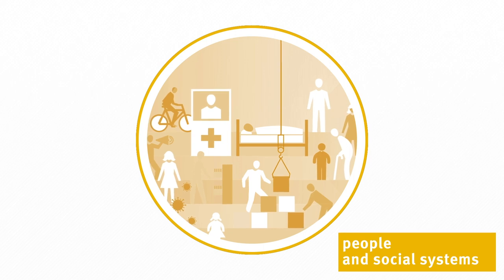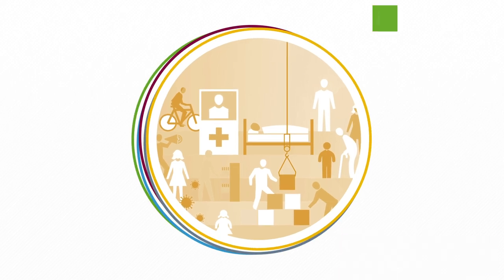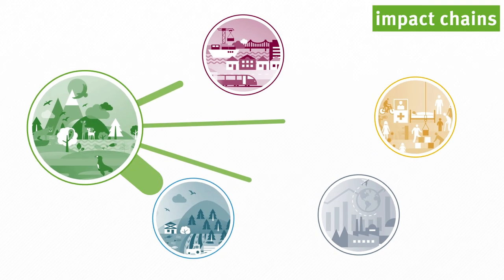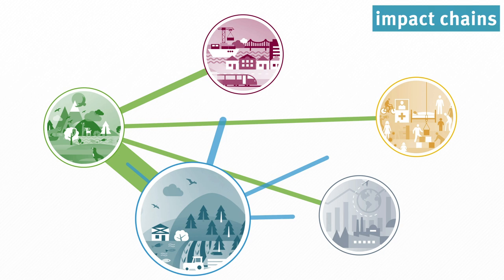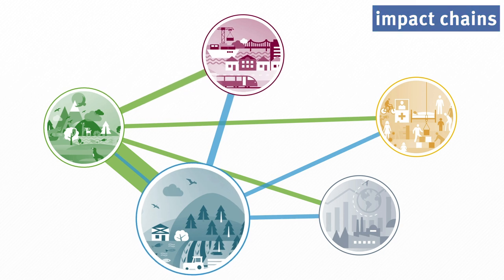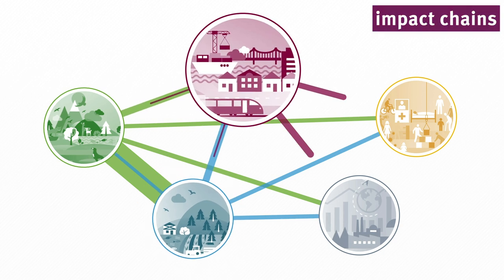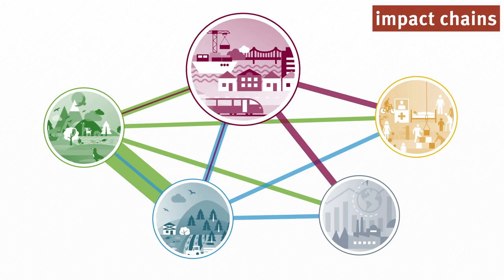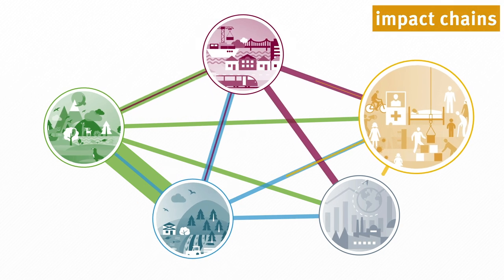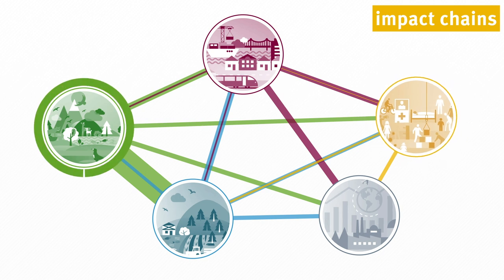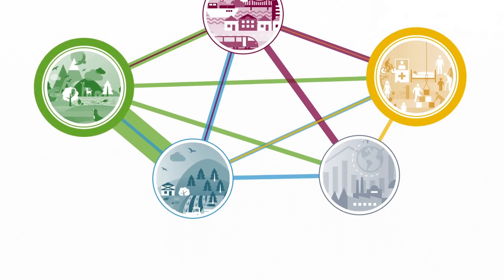Interactions between the systems are also analysed. At the beginning of the impact chains, climate change effects on natural systems and resources usually occur, whereas human health is often affected at the end.